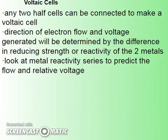Any two half cells can be connected to make a voltaic cell. The greater the potential difference, the greater the voltage between them. The direction of electron flow is determined by the difference in reactivity of the two metals, or reducing strength. You can use a metal reactivity table to predict both the flow and the relative voltage. This table is on page 12 of your book — it gives the electrode potentials. The most reactive metal has the highest negative potential, decreasing from there. You subtract the two potentials to calculate the relative voltage you can expect; a more reactive paired with a less reactive metal should generate the greatest potential.